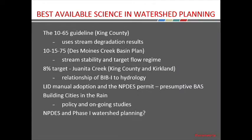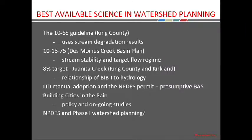These three guidelines were developed using different approaches. The 10-65 looked at already-developed watersheds and asked what point a watershed becomes degraded — more than 10% impervious or 65% forest disturbed tends to be degraded. The 10-15-75 Des Moines Creek standard was based on stream stability: development meeting those thresholds yields a stable stream. The 8% target is a newer approach relating development to a specific stream health metric — the benthic invertebrate index, or bug counts. If a stream changes enough, the bugs are affected and the stream is considered biologically unhealthy.